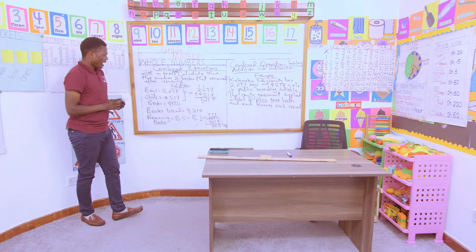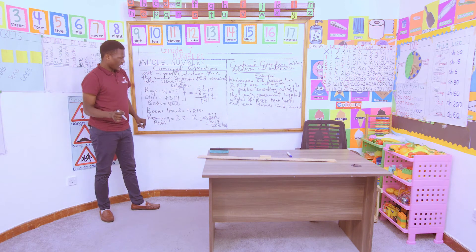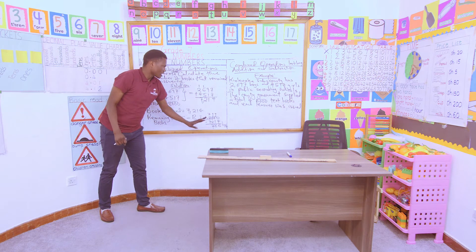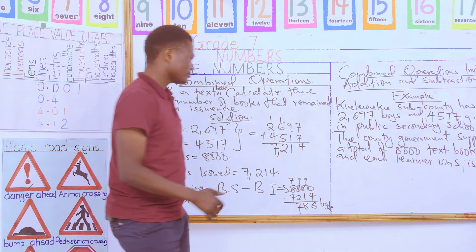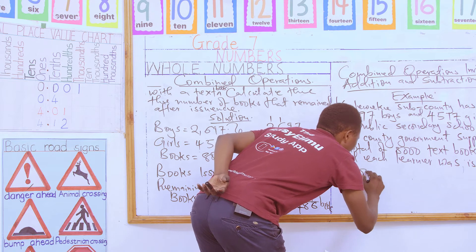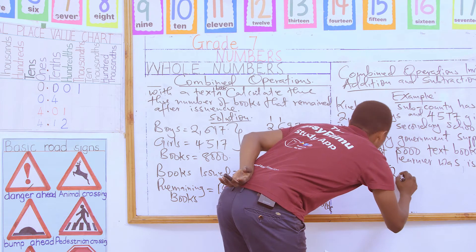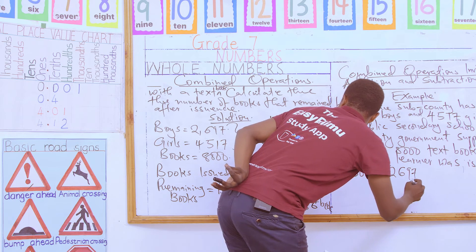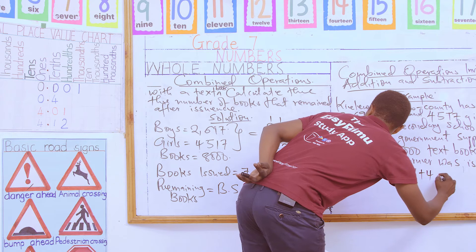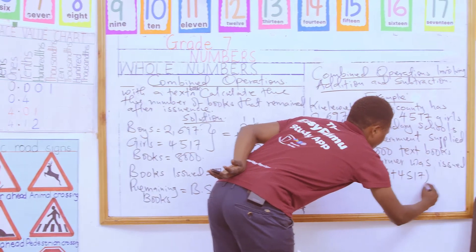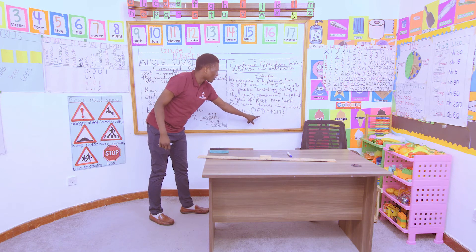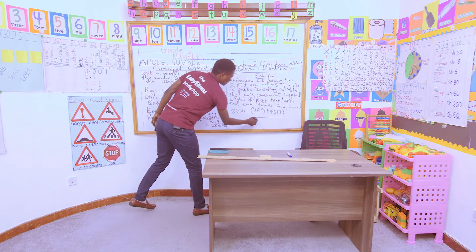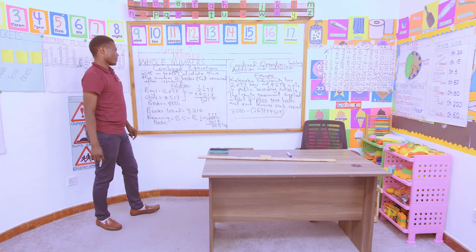Looking at this example, at some point we had to add and at some point we had to subtract in order to get our answer. In simple terms, what we did was: 8,000 minus the sum of (2,697 plus 4,517). We performed what is inside the bracket first, which is addition, then we eventually subtracted. That was the meaning of our question.